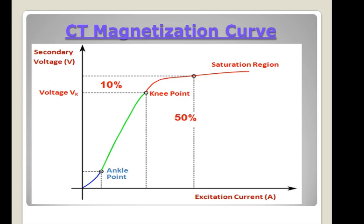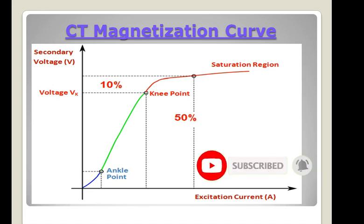Prior to saturation, the flux density in the core is proportional to the ampere-turns, or excitation current. On reaching saturation, the magnetizing inductance becomes low and the total primary current is utilized in exciting the core alone, causing the CT secondary output to become almost nothing. In the saturation zone, the CT behaves like an open circuit. It is very difficult to avoid this saturation during short circuit conditions. Hence, in normal operating conditions, protection CT operates in the linear zone below the knee point, whereas the measuring CT operates in the ankle point region, since the accuracy class in measuring CT must be far better to avoid any error.